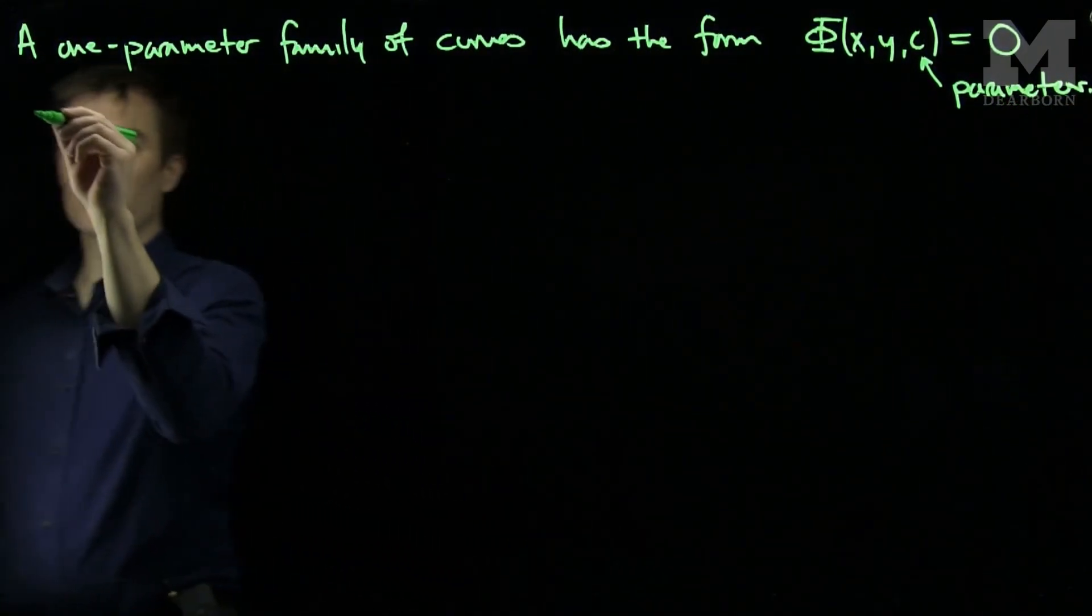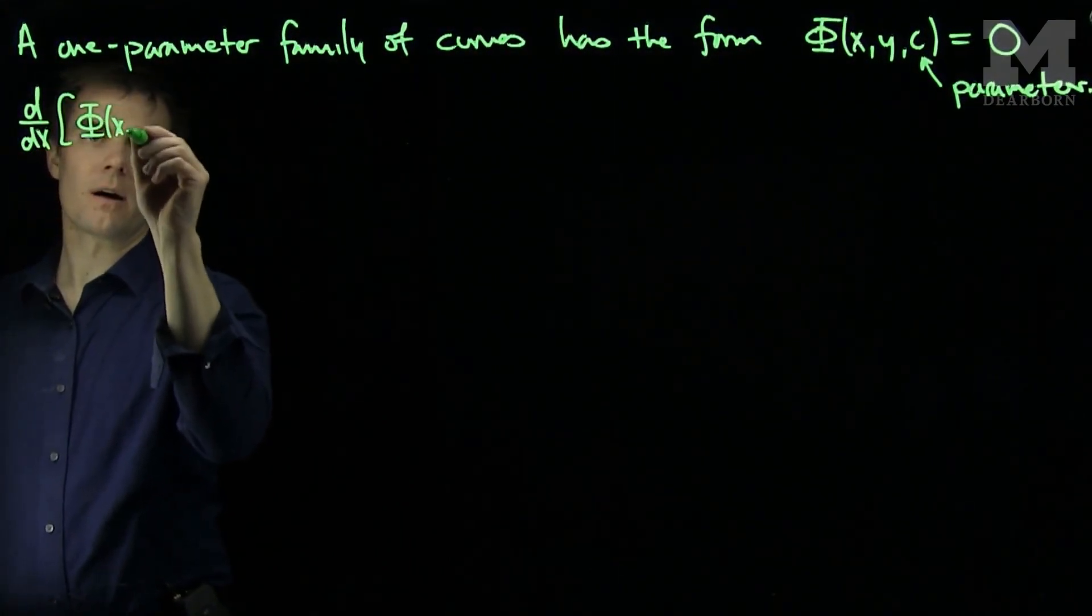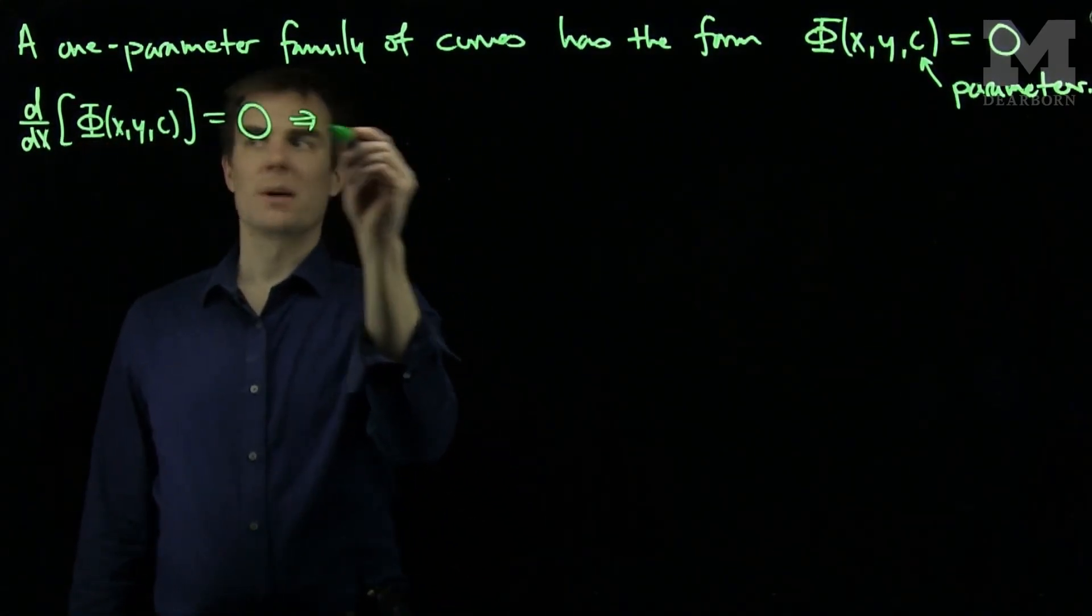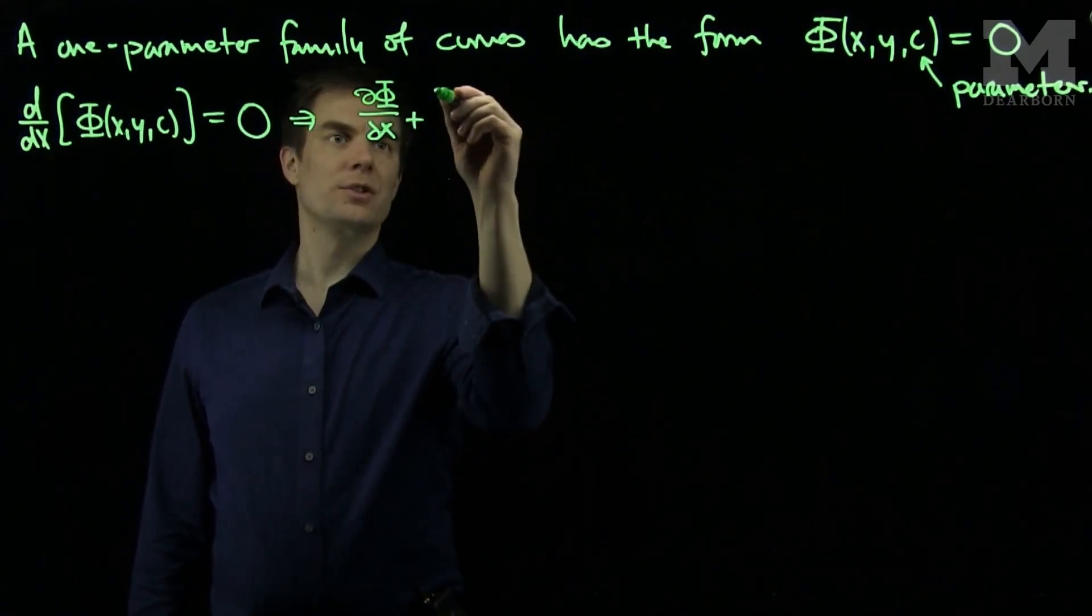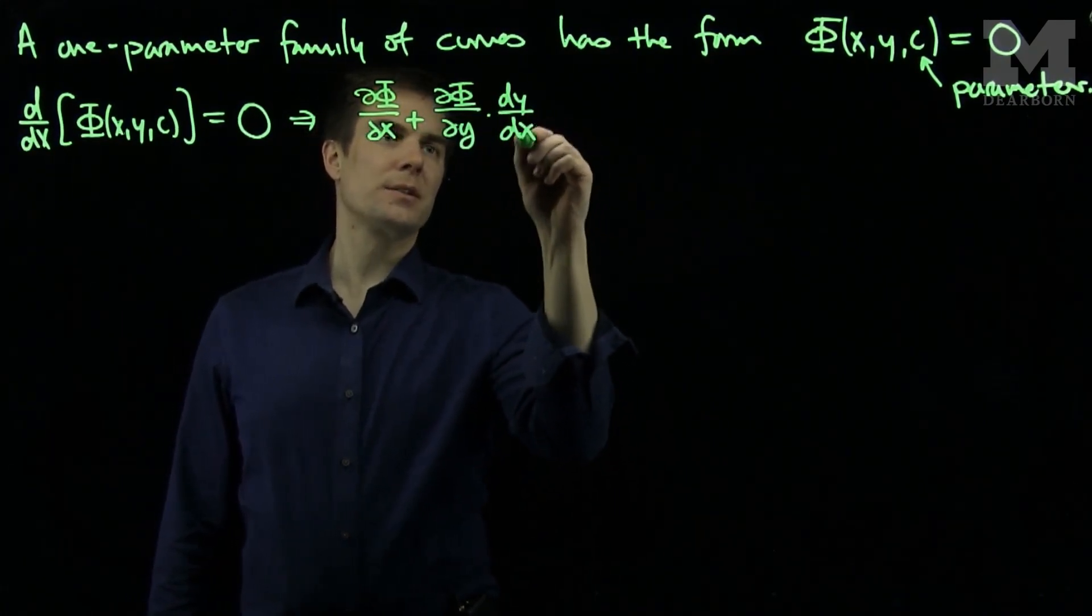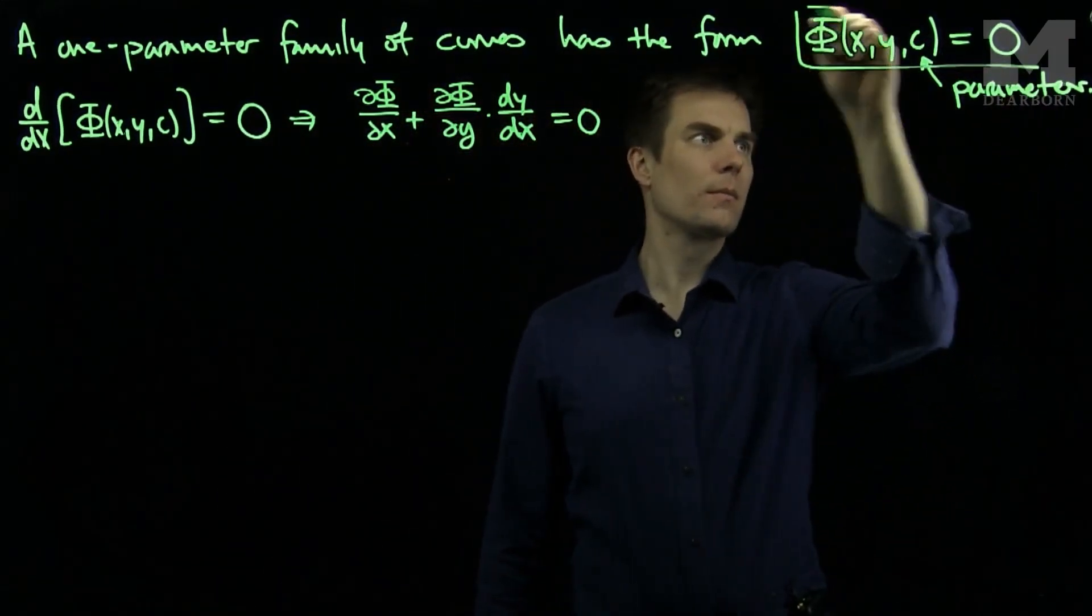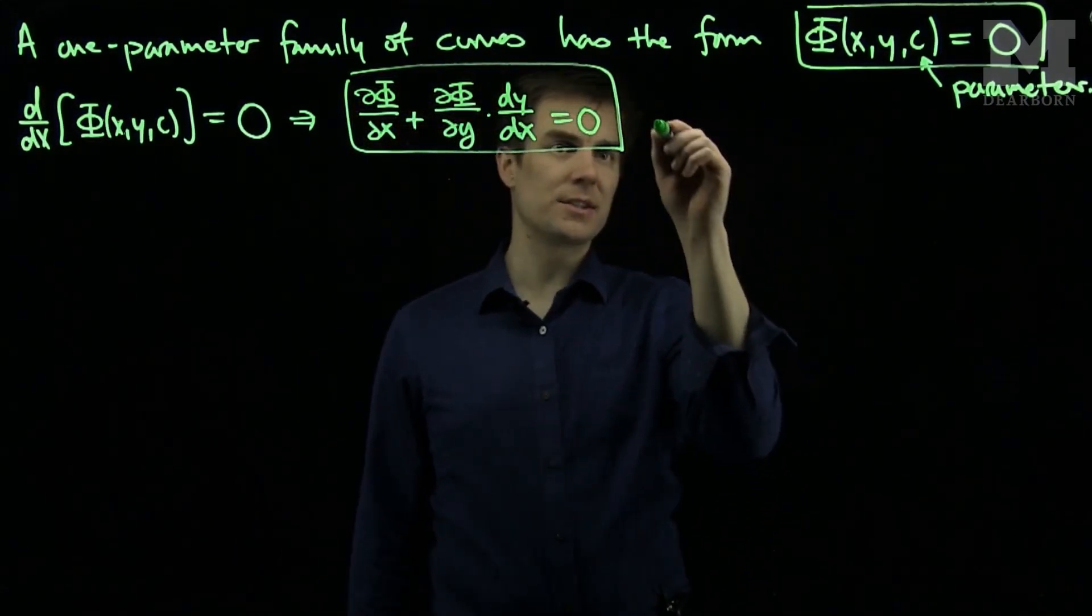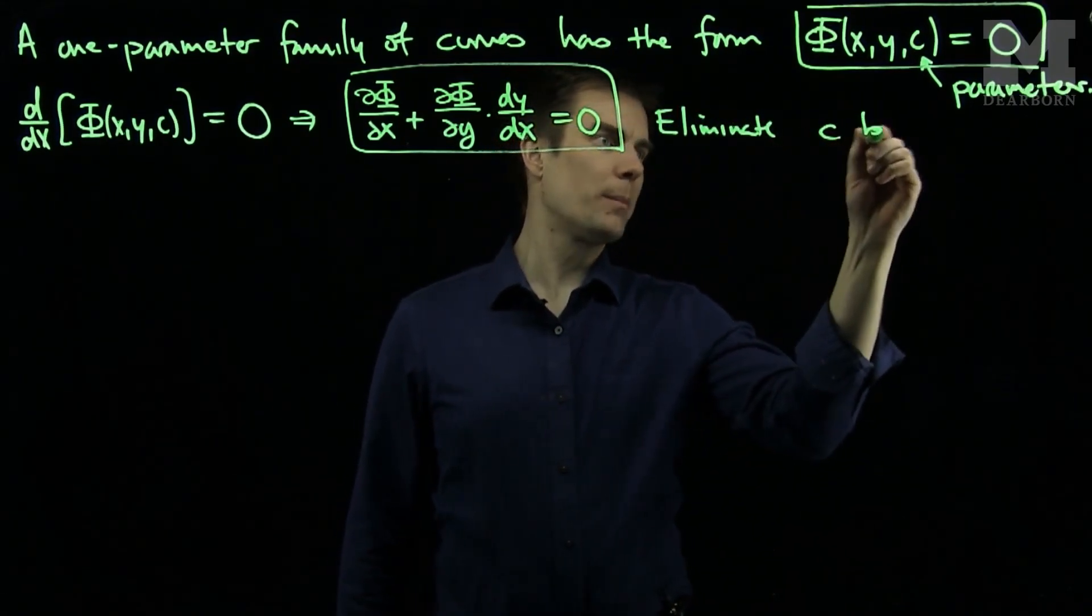What we can do is take the derivative with respect to x of our expression, which equals zero. The chain rule tells us this is ∂φ/∂x + (∂φ/∂y)(dy/dx) = 0. Between these two equations, we can eliminate c.